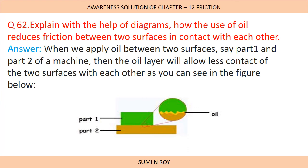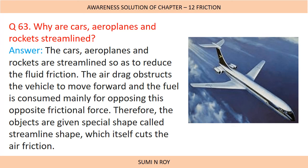Next question: Explain with the help of a diagram how the use of oil reduces friction between two surfaces in contact. When we apply oil between two surfaces — say part 1 and part 2 of a machine — the oil layer allows less contact between the two surfaces, as shown in the figure. You only need to draw this figure. Next question: Why are cars, aeroplanes and rockets streamlined? They are streamlined to reduce fluid friction. Air drag obstructs the vehicle moving forward and fuel is consumed mainly for opposing this frictional force. Therefore objects are given a special streamlined shape which cuts through the air friction.